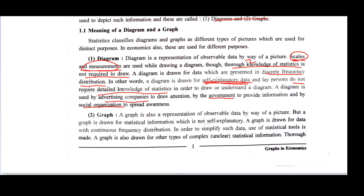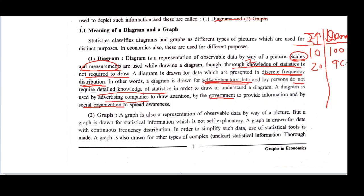A diagram is used for discrete frequency distribution. For example, consider the relationship between price and demand. As price increases, quantity demanded decreases. When price is Rs. 10, demand is 100; when price is 20, demand is 90; when price is 30, demand is 80; when price is 40, demand is 70; when price is 50, demand falls to 60. This is discrete data, and for this type of discrete data we use a diagram.